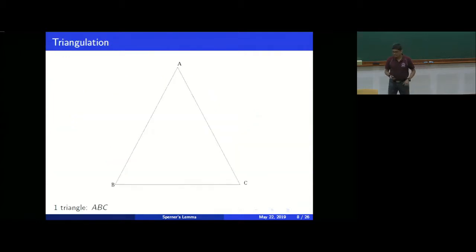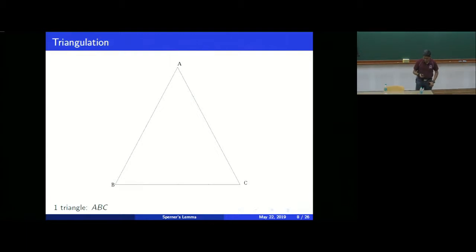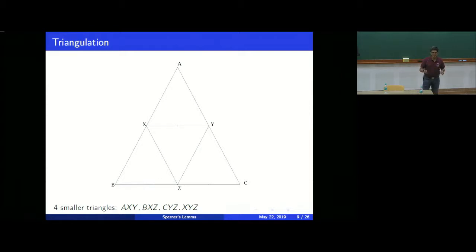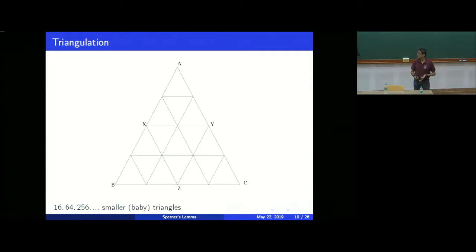Now let's come to Sperner's Lemma — the main point of this talk. Before we start, let us discuss triangulation. We have a triangle ABC. You take the midpoints of each edge and connect them — say the midpoints are X, Y, Z. Connecting the midpoints of ABC gives four smaller triangles: AXY, XBZ, ZCY, and XYZ. You can continue: from 4 triangles, go to 16, then 64, 256 and so on. You can take this triangulation at any given stage.